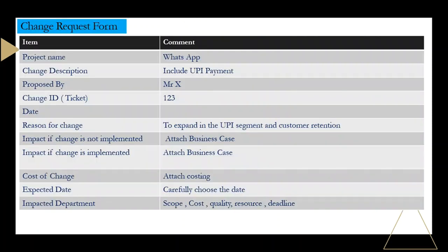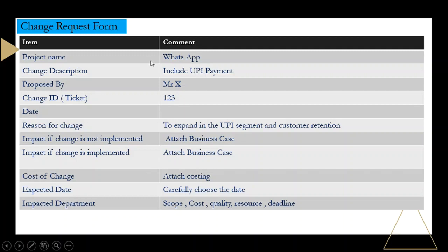There is already an existing process in every organization based on their historical learning — they have created a process. A change request form is created whenever a change request comes in. It includes the name of the project. I have given you an example of WhatsApp just for understanding. The change description is what is expected — let's say I have written a change request that there was no UPI payment in WhatsApp. And then, who has proposed this change? Let's say it is proposed by Mr. X.